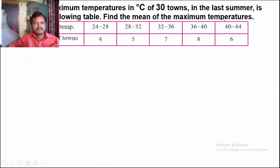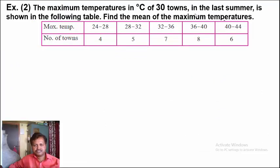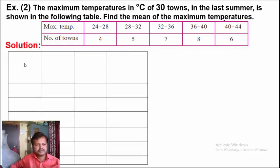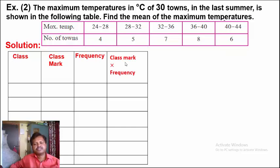Now the second example: The maximum temperature in degree Celsius of 30 towns is shown in the following table. Find the mean of the maximum temperature. Draw a table with four columns: Class (temperature in degree Celsius), Class Mark (Xi), Frequency (number of towns, denoted by Fi), and Class Mark into Frequency (Xi into Fi).